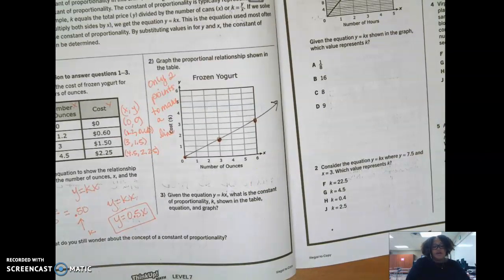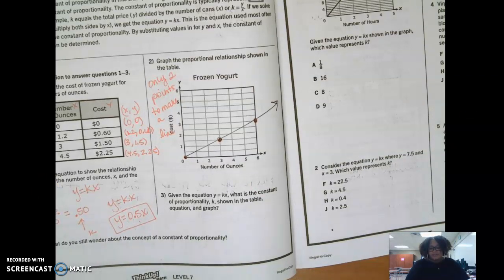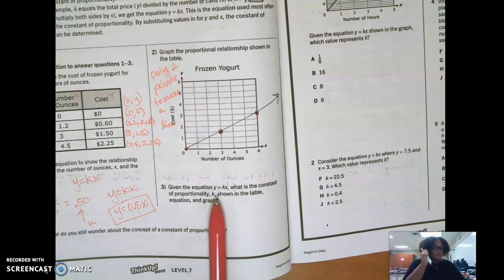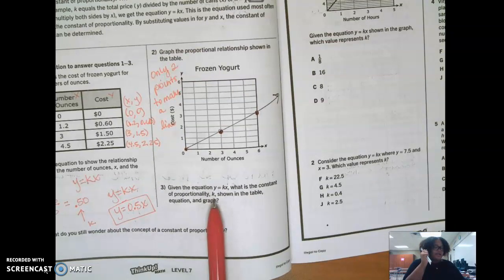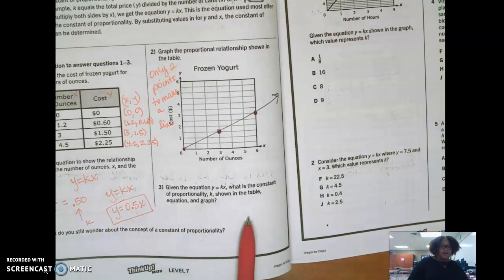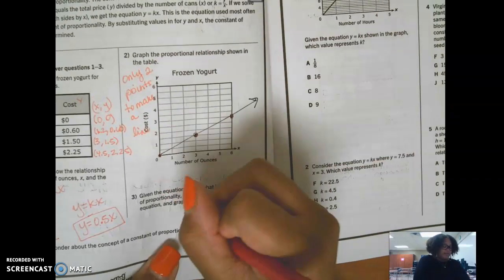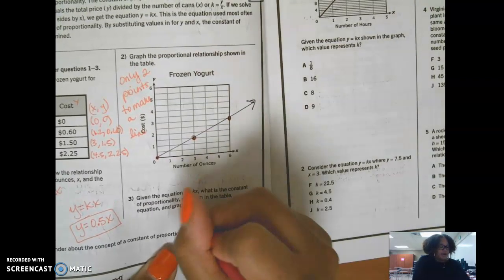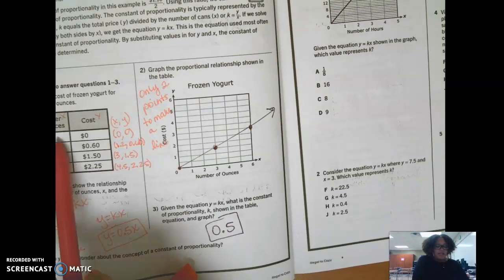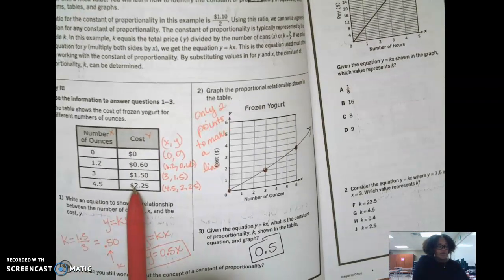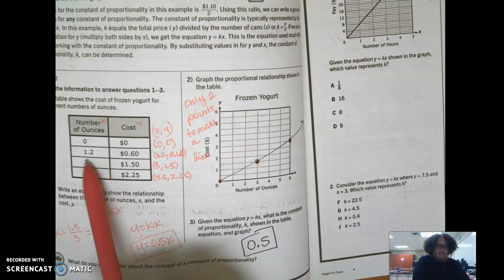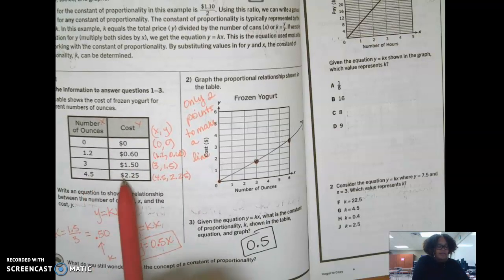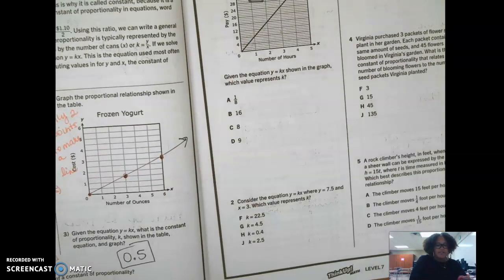And then it says given the equation y equals kx, what is the constant of proportionality? Good morning mom. Alright, so once I've done all of this over here, this question is easy to answer. It says given the equation y equals kx, what is the constant of proportionality k shown in the table equation and graph. It's just going to be 0.5. You don't put 0.5x, or you can, I'm sorry. You don't put y equals 0.5x, you just put 0.5. That is the number that I'm multiplying each x value by to get y. And this is basically cutting it in half. Half of $1.20 is 60 cents. Half of 3 is $1.50. Half of 4.5 is $2.25. Half of 6 is 3. That's the relationship there.